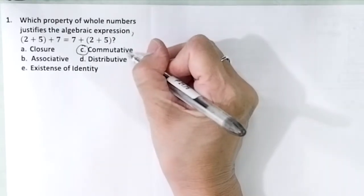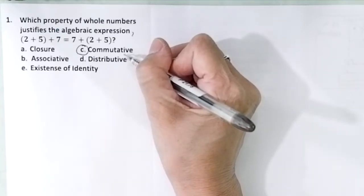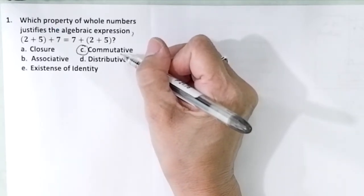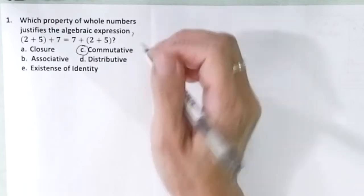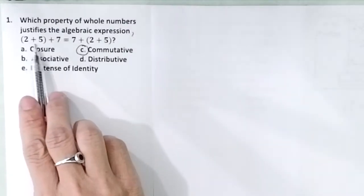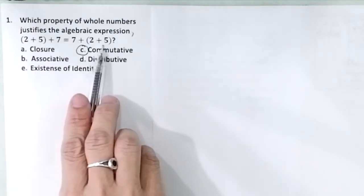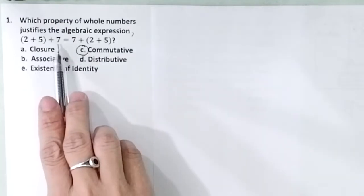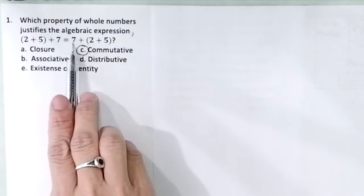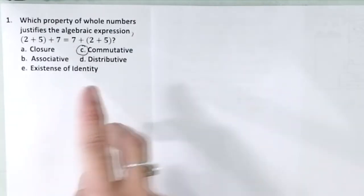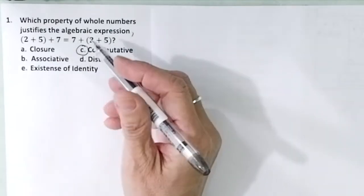Remember students, commutative property is telling us that the order of the addends doesn't affect the sum. In this case, the 2 plus 5 here, which is in the first position, just went to the second position. And the second position, 7, went to the first position. So there was just a change in the order.